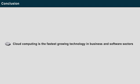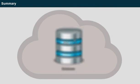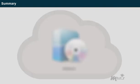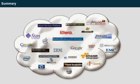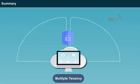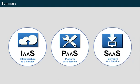In conclusion, cloud computing is the fastest growing technology in the business and software sectors. In this lesson, you learned that computing over services like servers, storage, networking, databases, and software in a secured and efficient way is called cloud computing. Cloud computing has broad network access, and multi-tenancy is a key feature. The three types of services are Infrastructure as a Service, Platform as a Service, and Software as a Service.